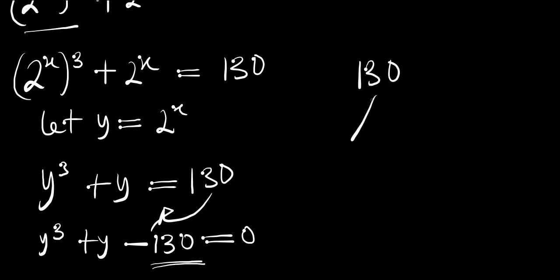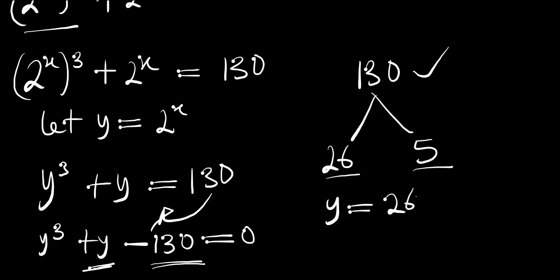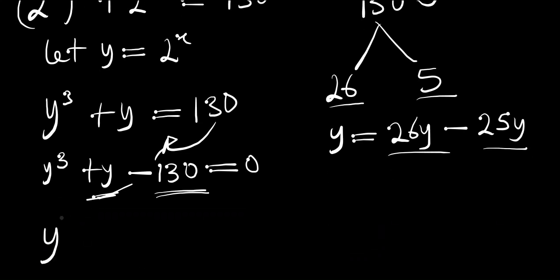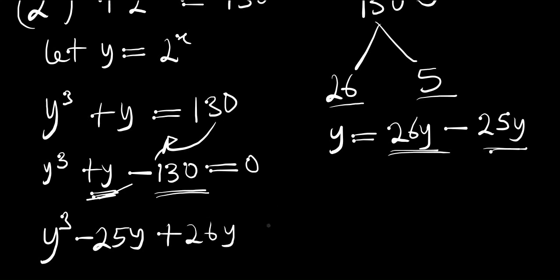We split 130 into two parts: 26 and 5, since 26 × 5 = 130. We replace the y term with 26y - 25y. So the equation becomes y³ - 25y + 26y - 130 = 0.